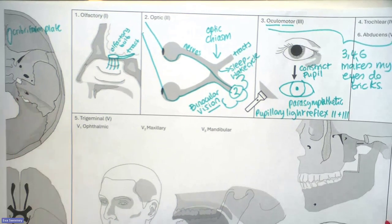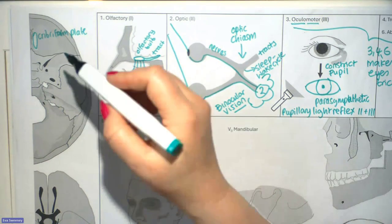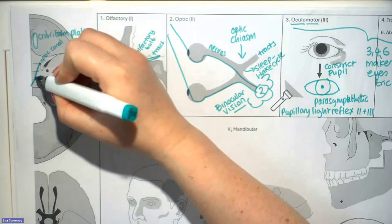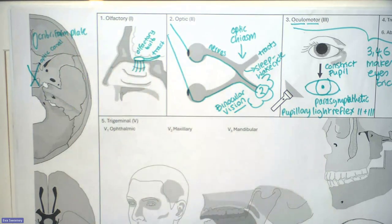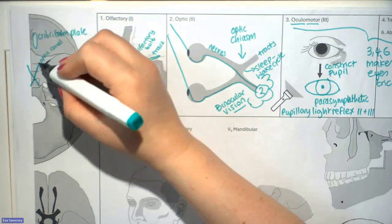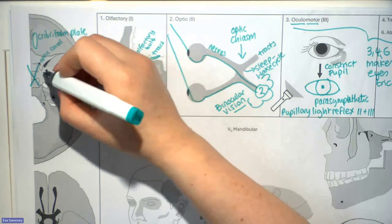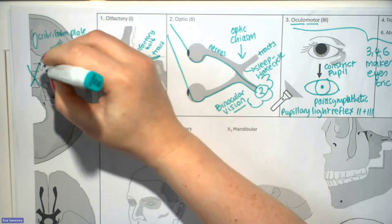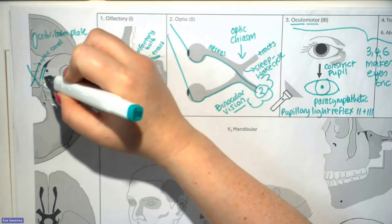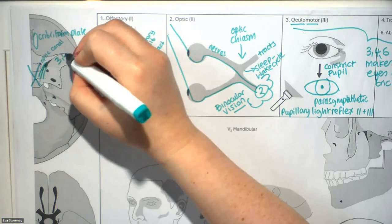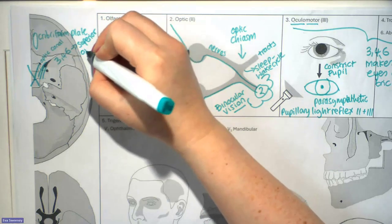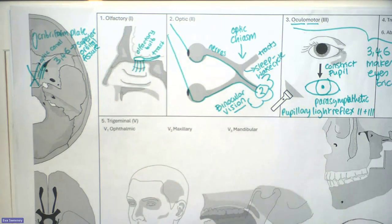For the optic nerve, we have the optic canal just here. The oculomotor nerve passes through this elongated fissure, as does the trochlear nerve and the abducens nerve. So three, four, and six will pass through the superior orbital fissure, which also leads to the orbit.